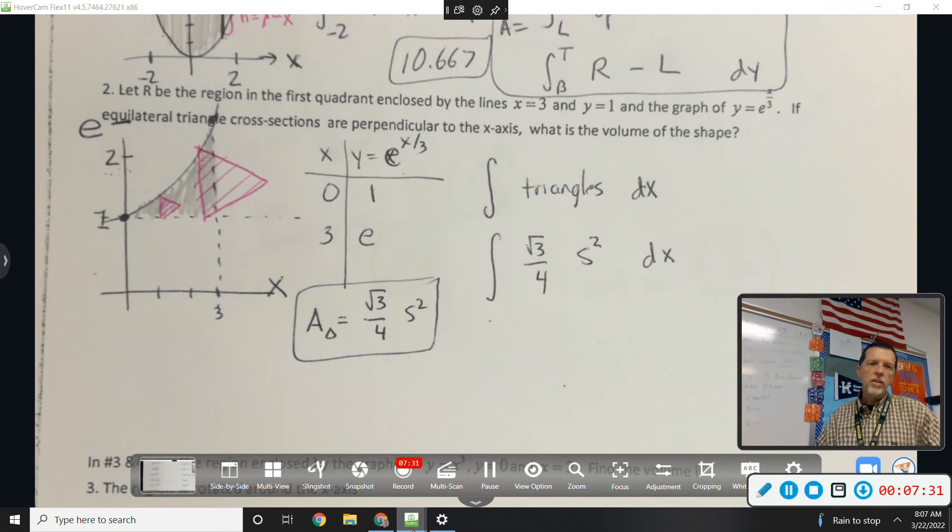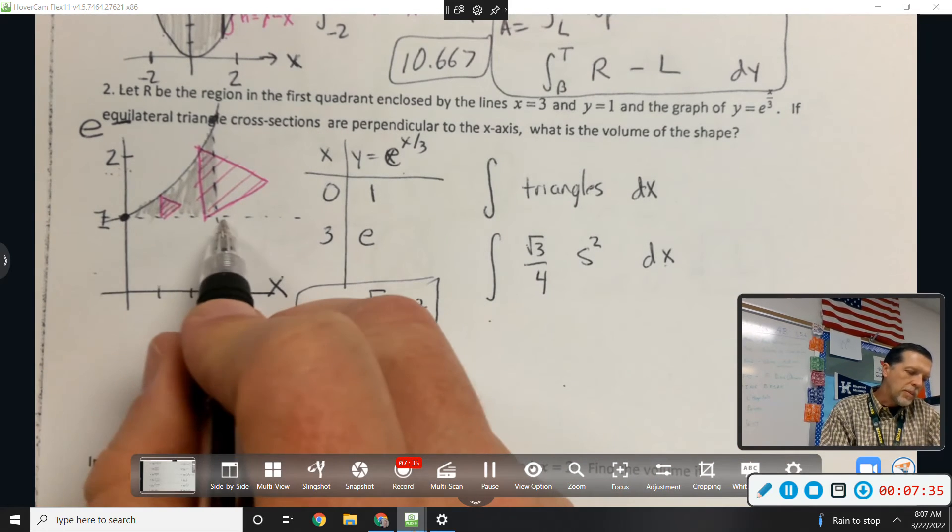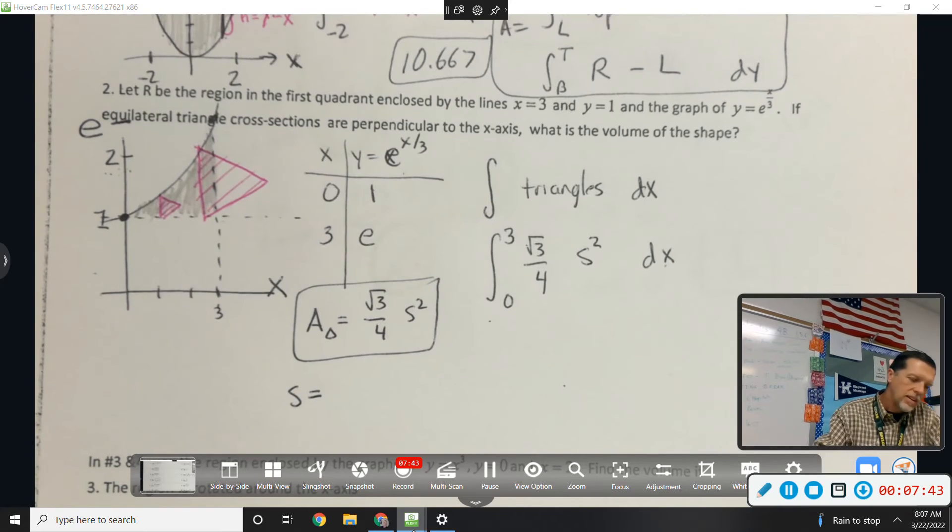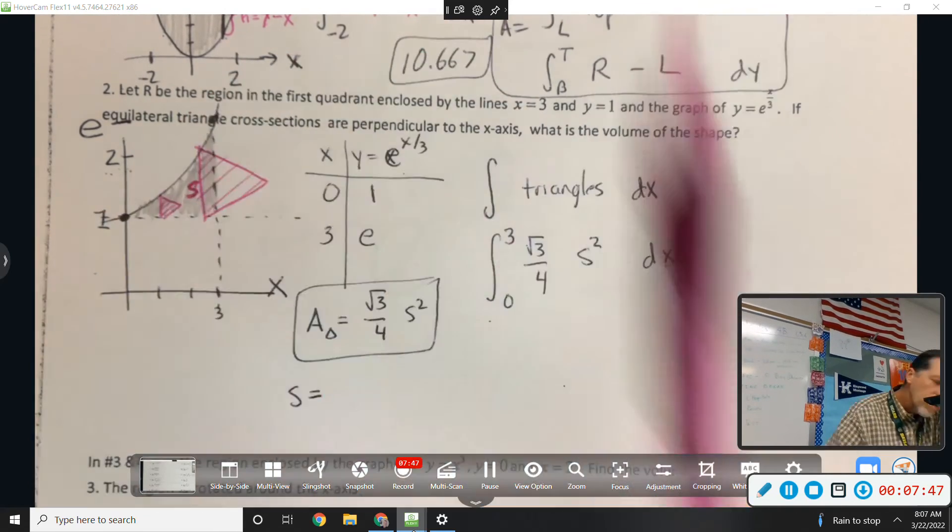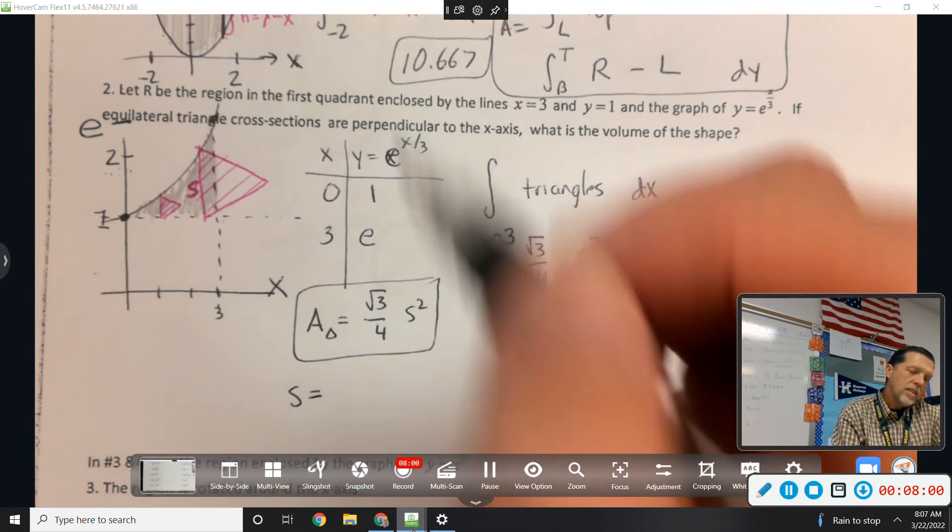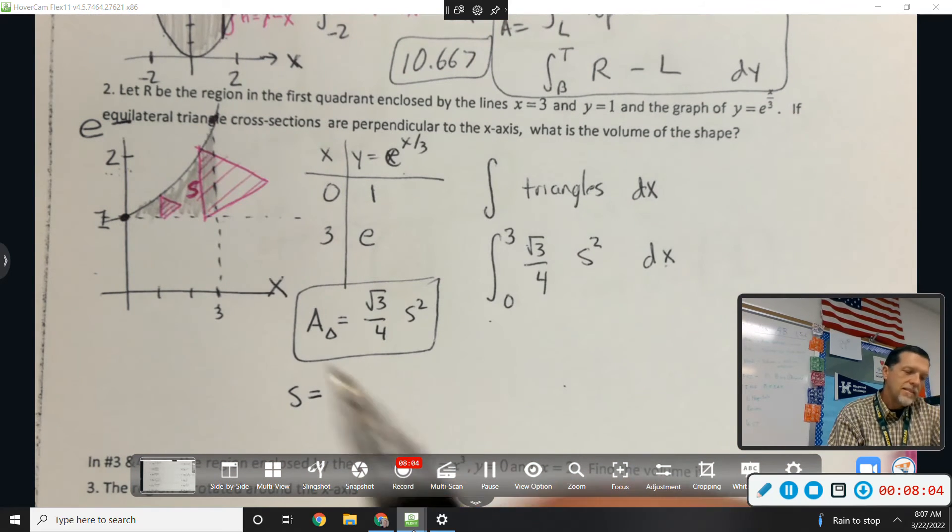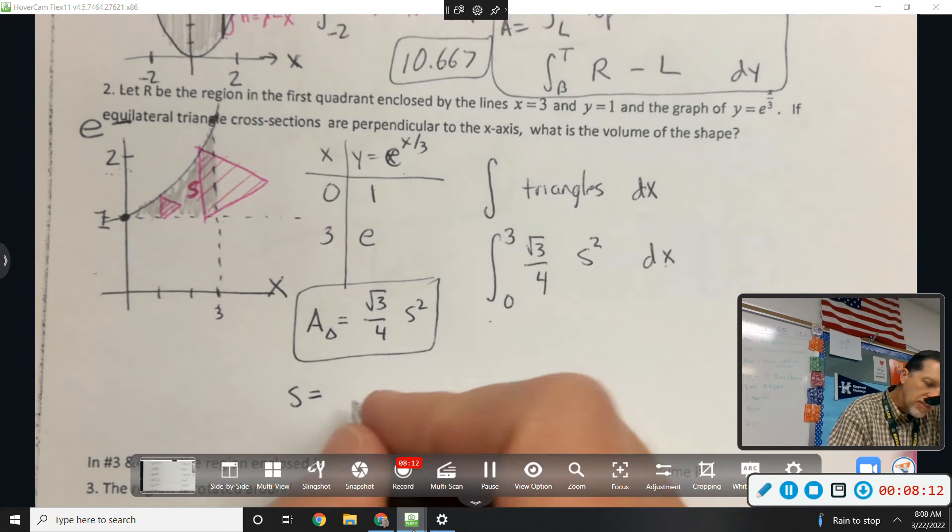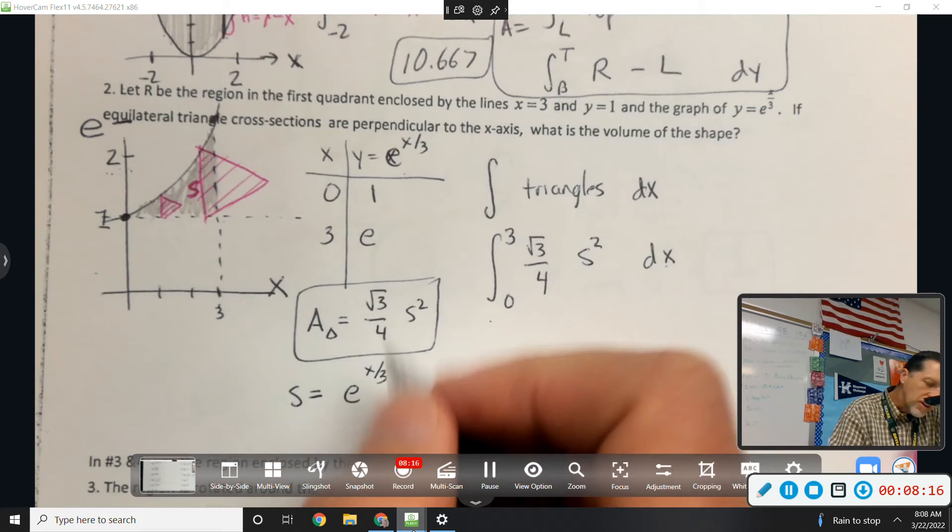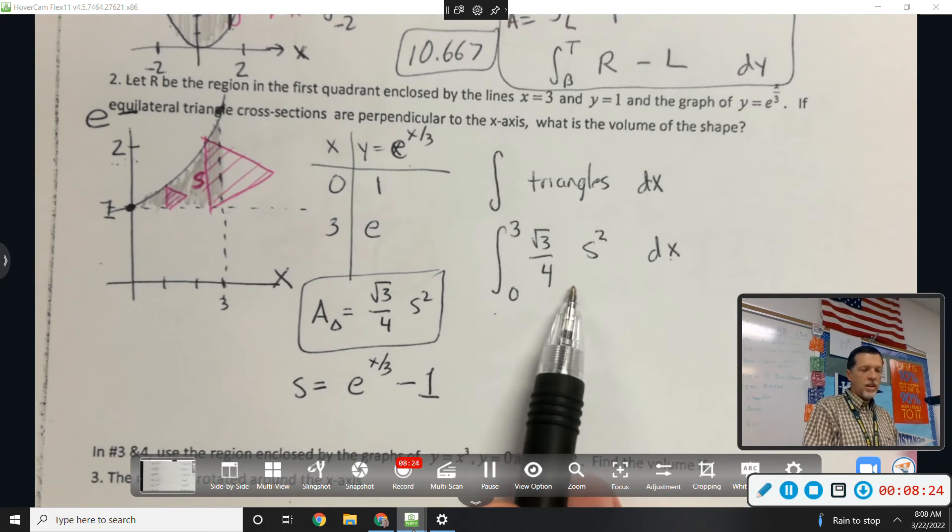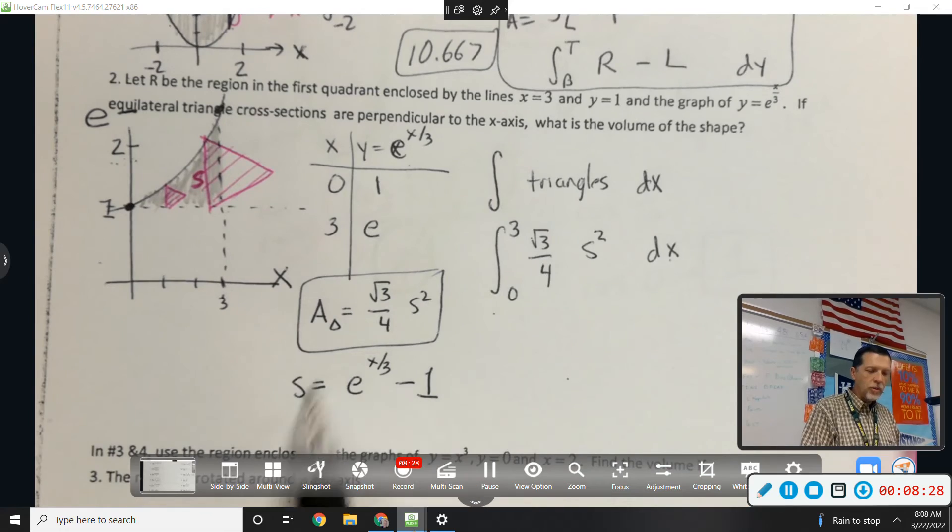Root 3 over 4, s squared, dx, so we'll add them up in the x-direction from 0 to 3. And now I just need to figure out what s is. So how big is s? Yeah, the top curve minus the bottom curve. So the top curve is e to the x over 3 and the bottom curve is just 1. And this would be enough work shown because now you can go to the calculator.